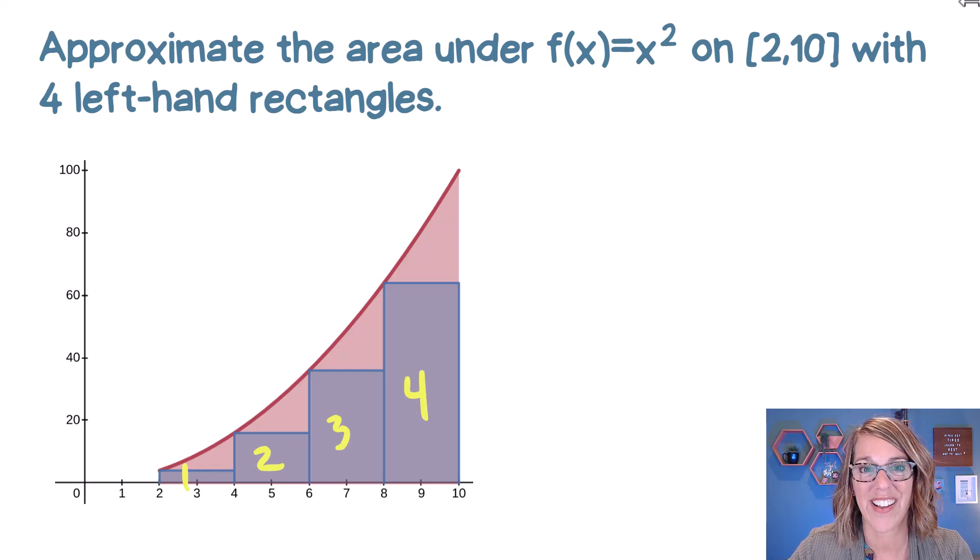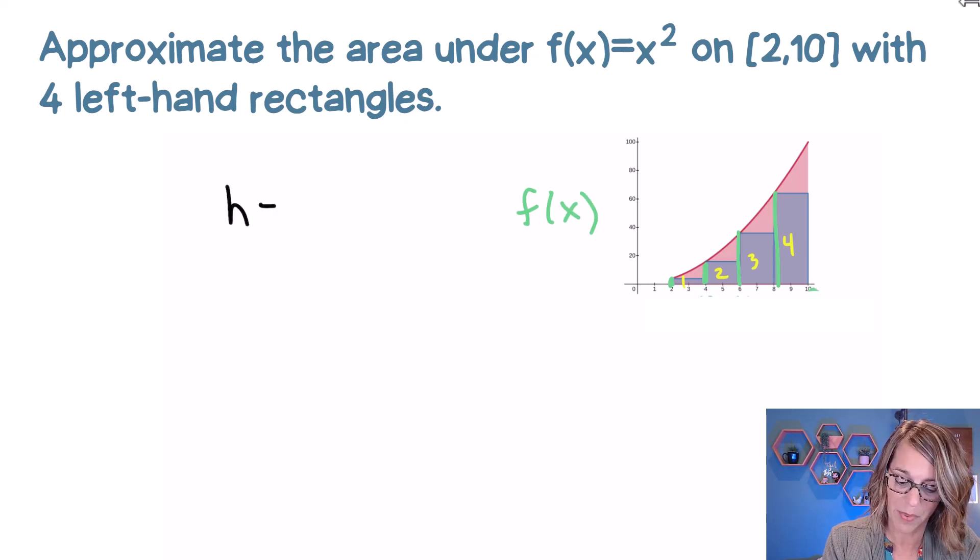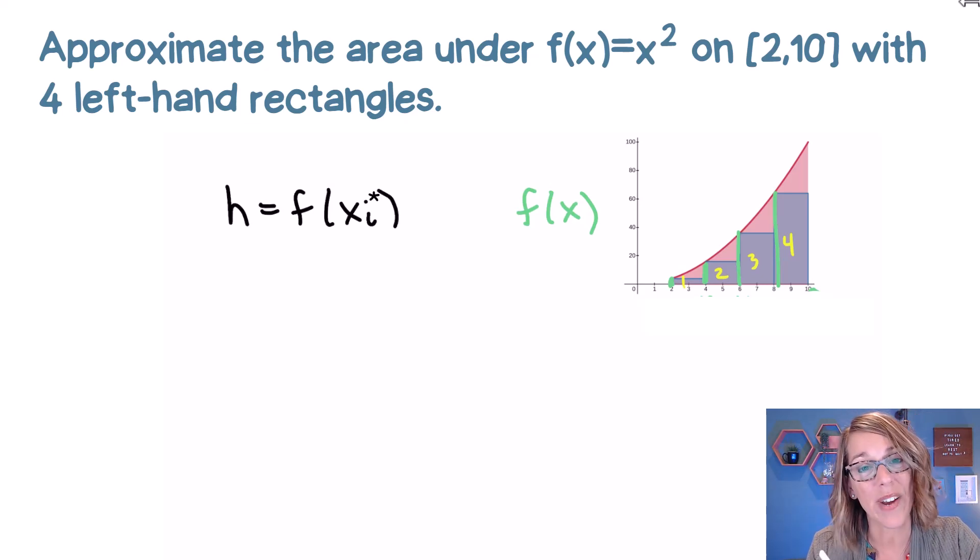So these four rectangles are left rectangles because the height is measured from the left-hand edge of each of those rectangles. Each of our heights is measured on the left-hand edge and each of those heights is a function value. So f of x is going to be our function value. Each of our heights is going to be a function value at the correct endpoint, this time being the left one. And each of those widths is going to be, we just call it delta x.